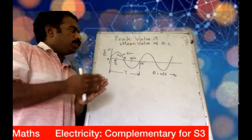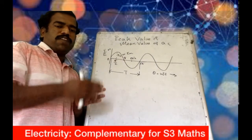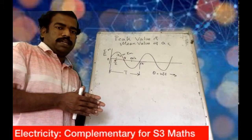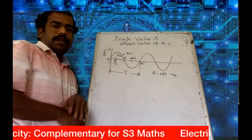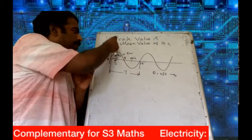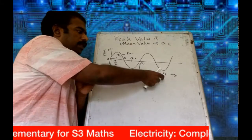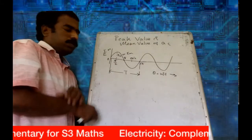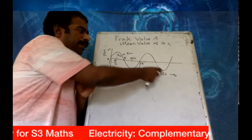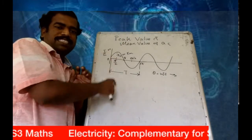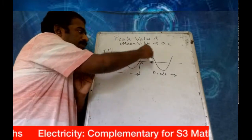Before that, we have to learn what is the period and frequency of alternating current. You can see this is the alternating current. In the x-axis you can see the angular part where θ is equal to ωt, and in the y-axis you can see current or voltage — this is the wave.